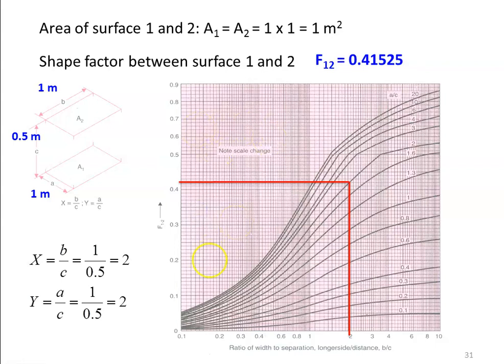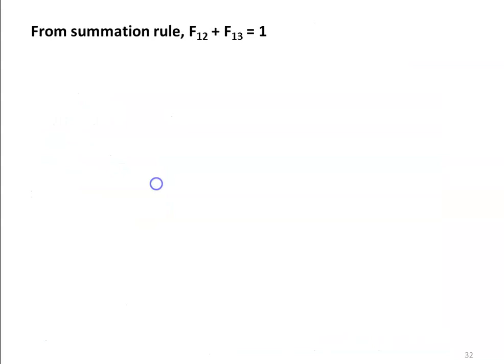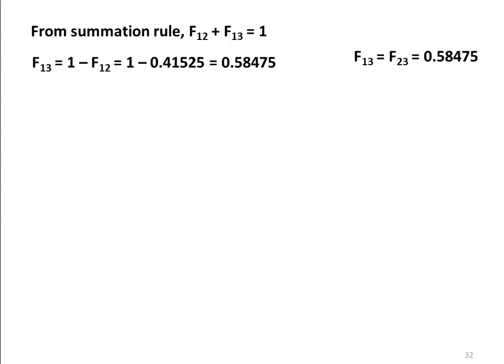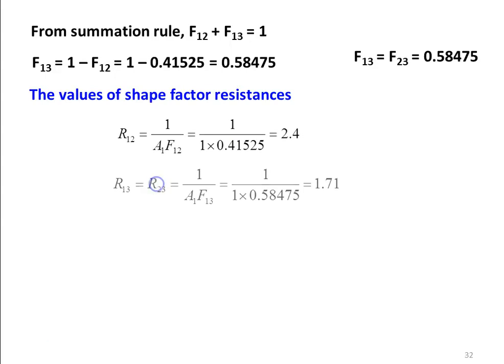You can read the shape factor from the table in the heat and mass transfer data book. From the summation rule, F13 equals 1 minus F12, which is 1 minus 0.41525 equal to 0.58475, and F13 equals F23 equals 0.58475. The shape factor resistances are R12 = 1/(A1 F12) = 1/(1 times 0.41525) equal to 2.4, and R13 equals R23 = 1/(A1 F13) = 1/(1 times 0.58475) equal to 1.71.